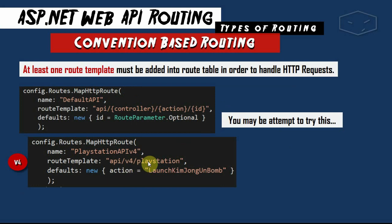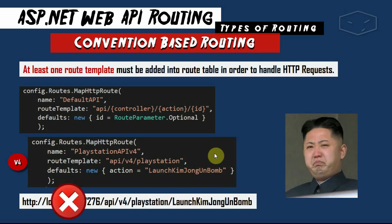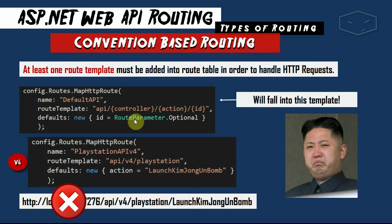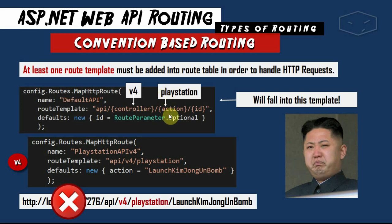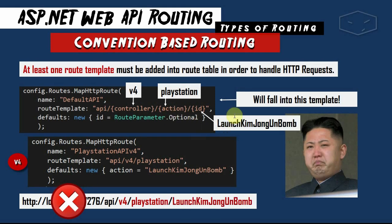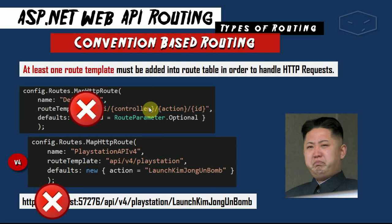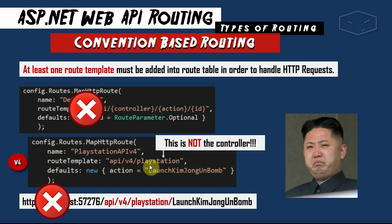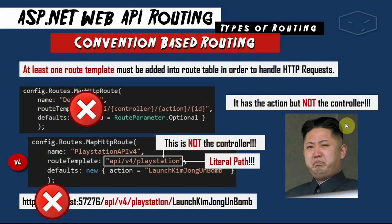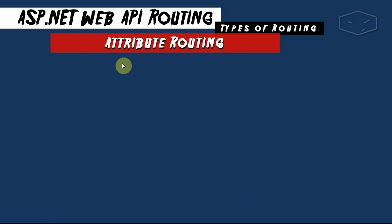You might be tempted to try something like a route api/v4/playstation with the action LaunchBomb — but this will not work, because the default template will interpret v4 as the controller, playstation as the action, and LaunchBomb as the id. Even if you remove the default template, it still won't work, because playstation here is a literal path segment, not the controller placeholder — without a controller placeholder, it can't route anything.